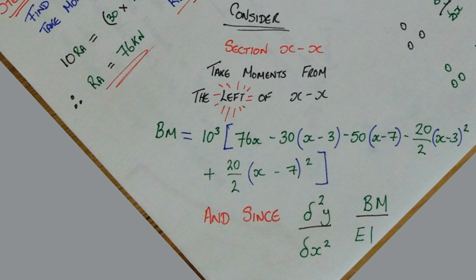Now what you need to consider is when you are using McCauley's theorem you go to roughly about a metre away, if it is in reality of course, from the edge of your beam. Then you form section XX. So what you are doing now is you are going to take moments from the left of X and X.